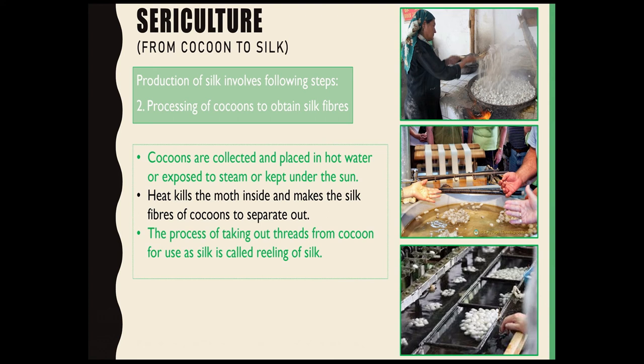The next step is processing of the cocoons to obtain the silk fiber. Once the silk moth has made the cocoon and it has hardened on exposure to air, these cocoons are collected and then either placed in hot water, exposed to steam, or kept under the sun. The heat kills the moth inside and causes the silk fibers of the cocoon to separate out. The process of taking out the threads from the cocoon for use as silk is called reeling of silk.